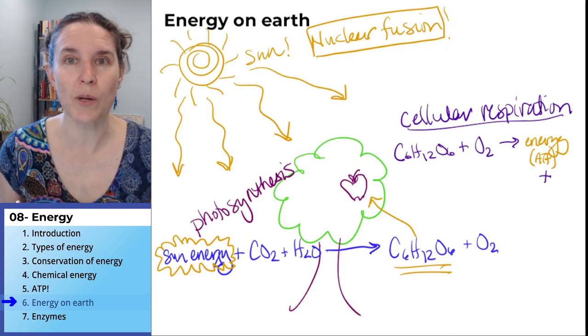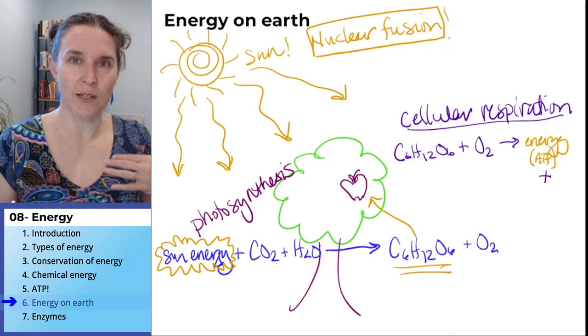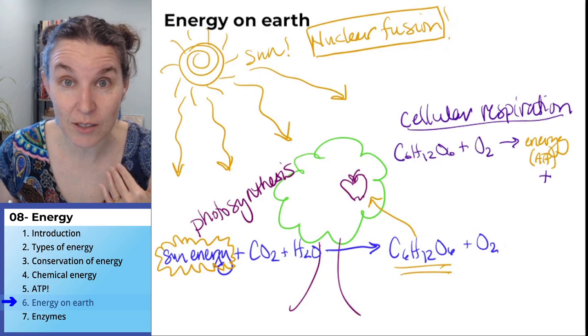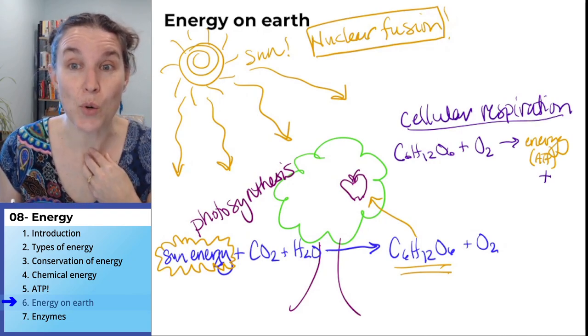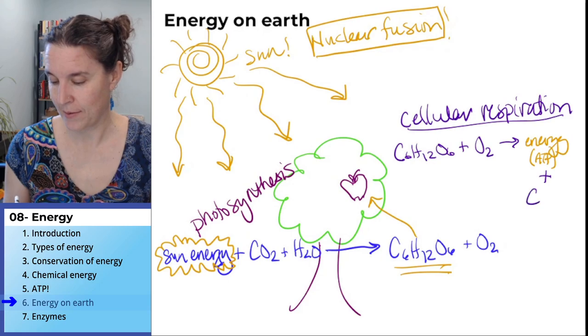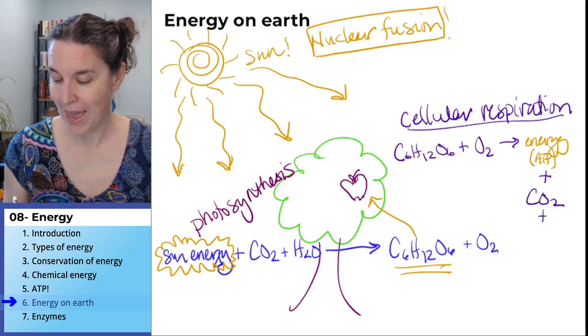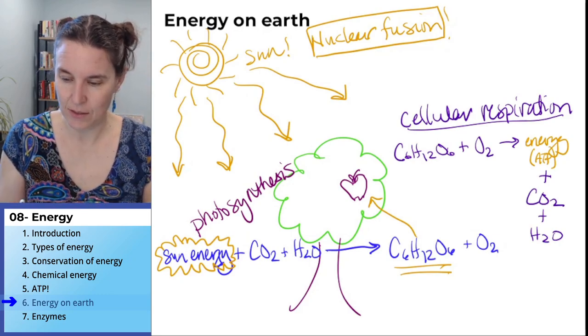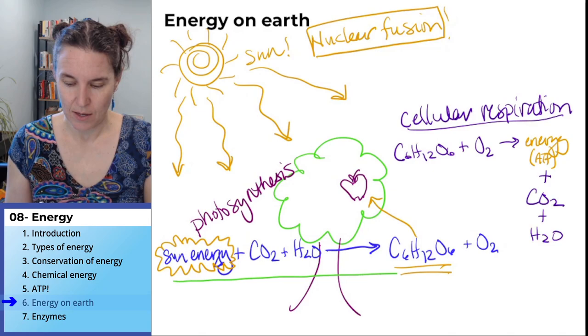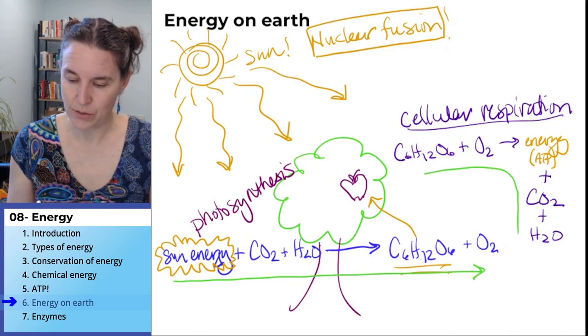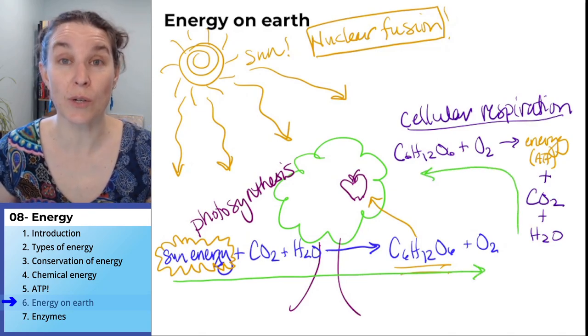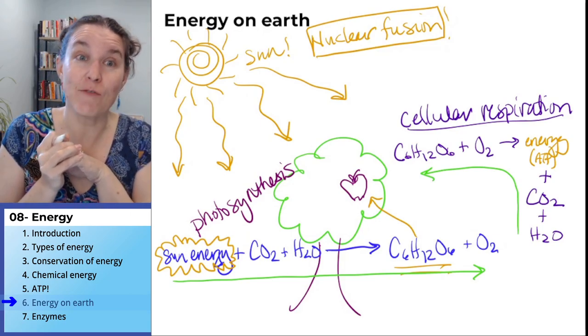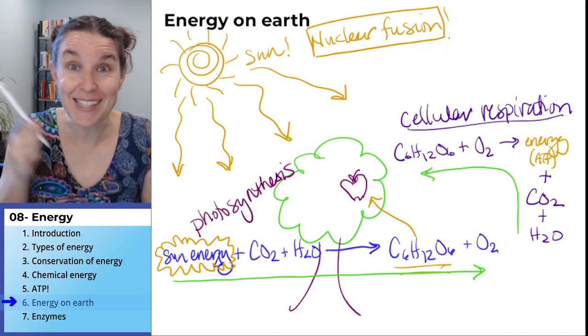ATP plus what do we breathe? We breathe in our oxygen so that we can burn our sugar. And we breathe out what? Carbon dioxide and water. Do you agree? Do you see this? They're backwards. Cellular respiration is just photosynthesis backwards, and photosynthesis is cellular respiration backwards. That's it.